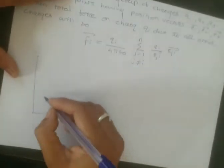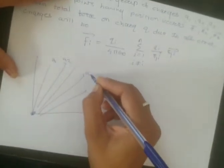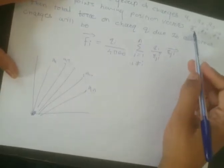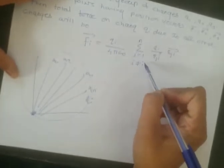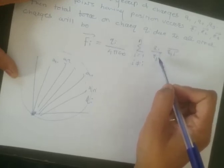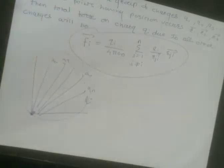Now if we have a group of charges q1, q2, q3, …, qn situated at points with position vectors r1, r2, r3, …, rn originating from the origin, then the total force acting on the charge qᵢ due to all other charges will be: Fᵢ = qᵢ/(4πε₀) · Σ(j=1, j≠i to n) qⱼ / rⱼᵢ² · r̂ⱼᵢ. This is the superposition principle.